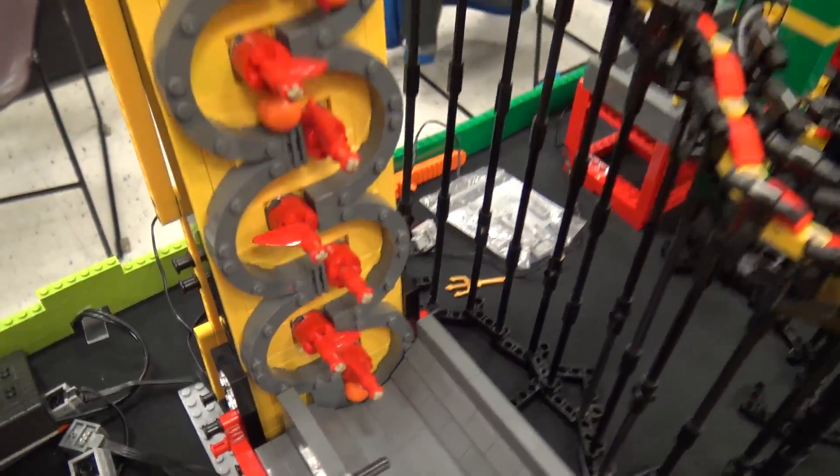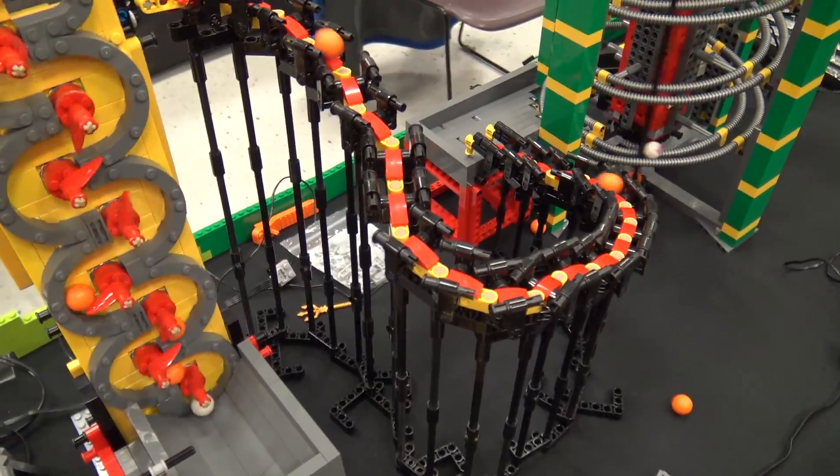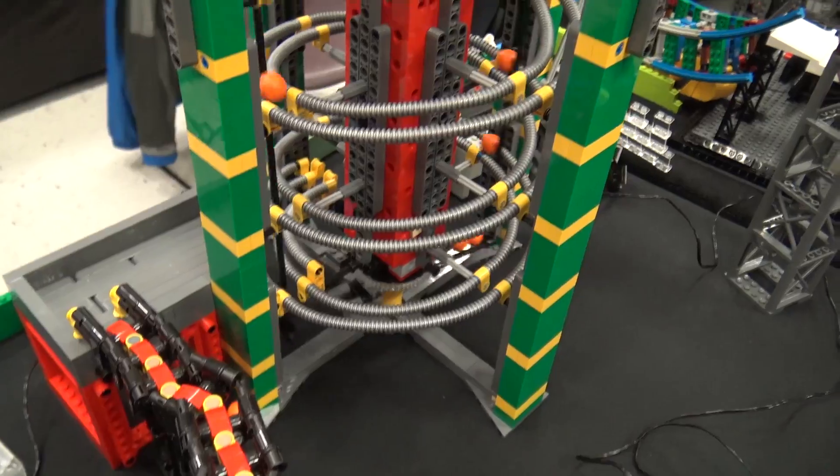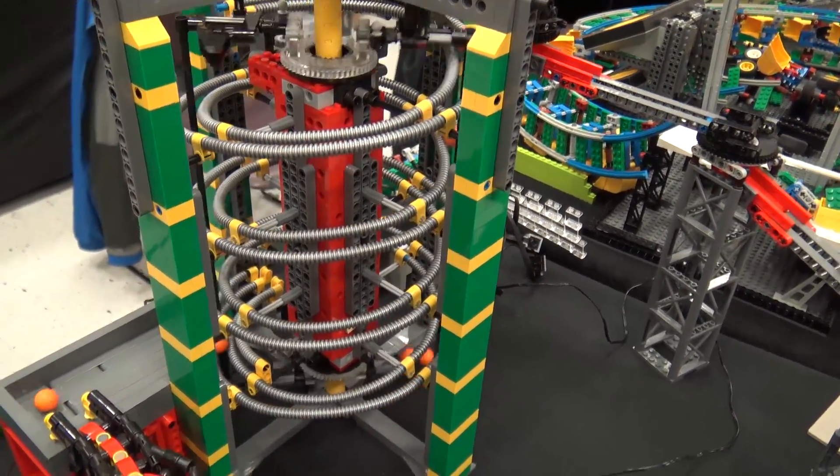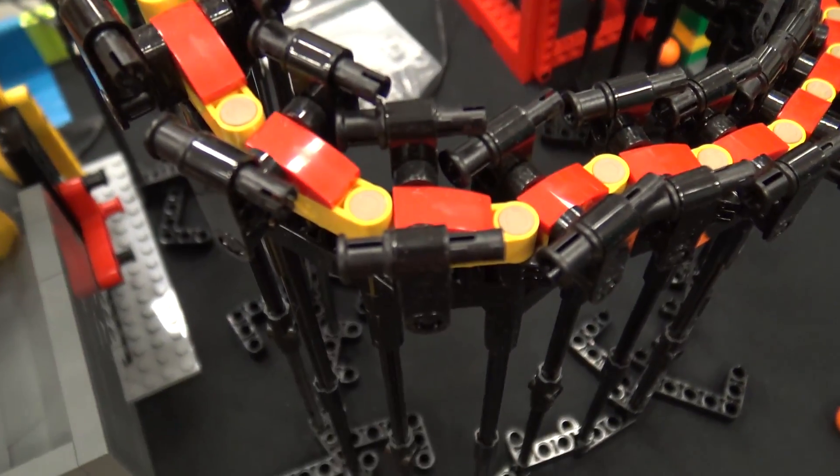And then coming off of that is an Akiyuki snake ramp back to Circular Logic. There you go. So the whole thing, have you ever timed how long it takes a ball to go through this whole circuit? It's pretty close to two and a half minutes.